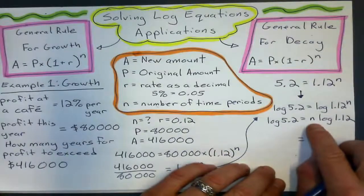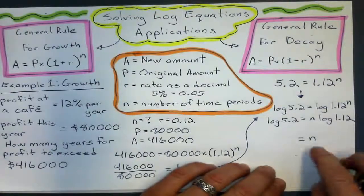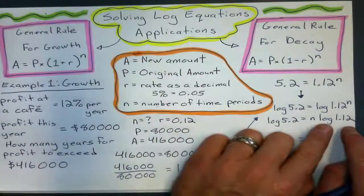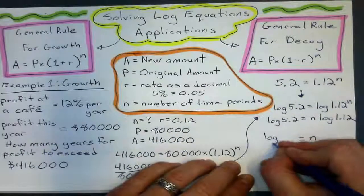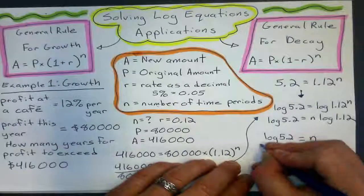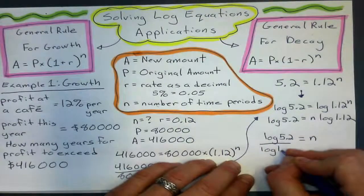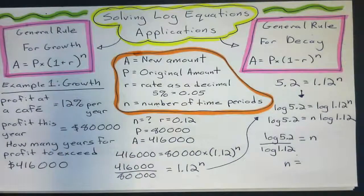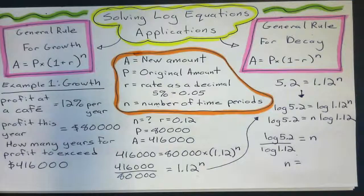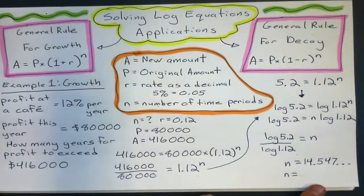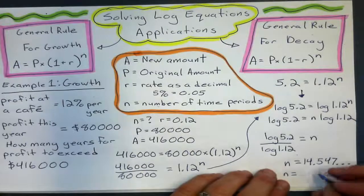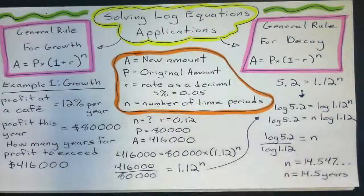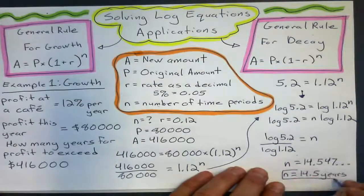And now, finally, to solve for that N, it's going to be log 5.2 divided by log 1.12. And I'll get my answer, which will be how long it will take to make that profit. Something to the tune of 14.547 something something. I'll just say about 14 and a half years.